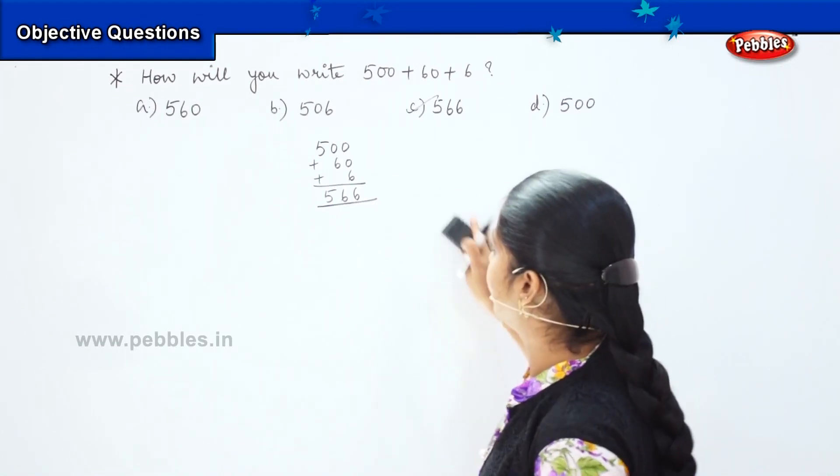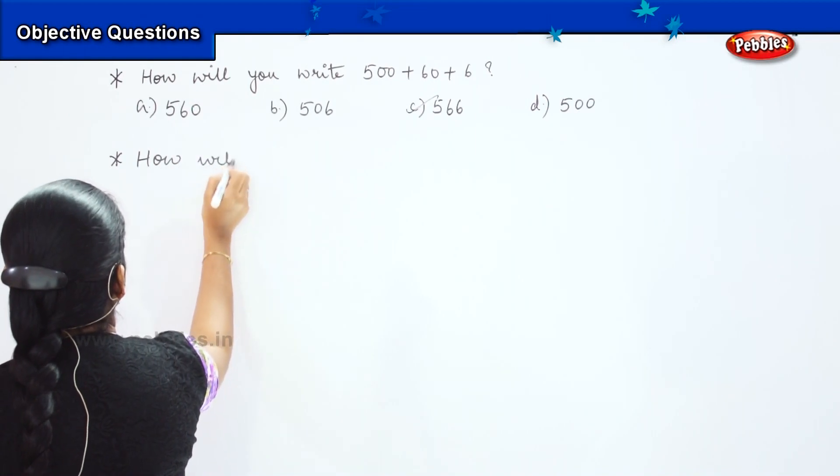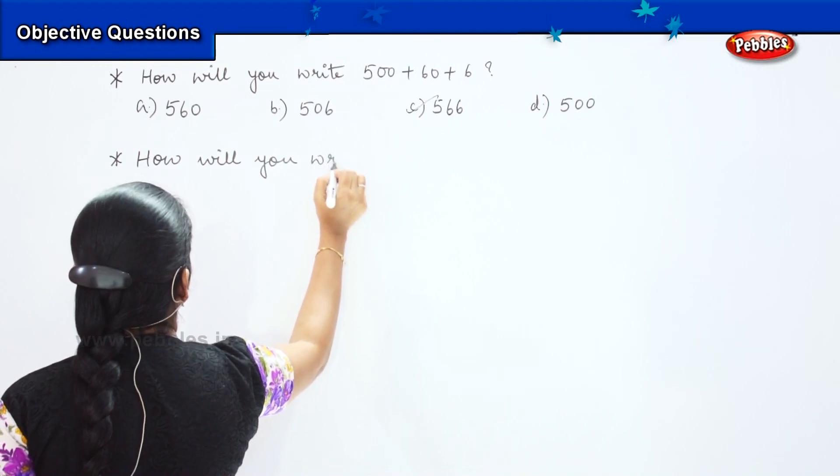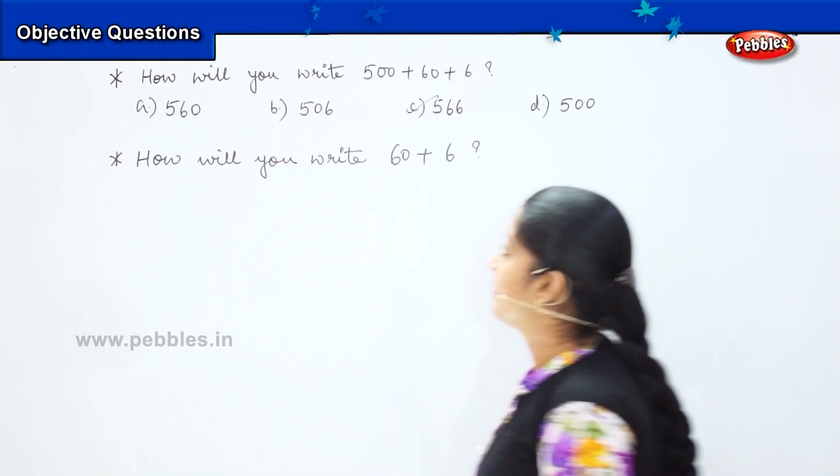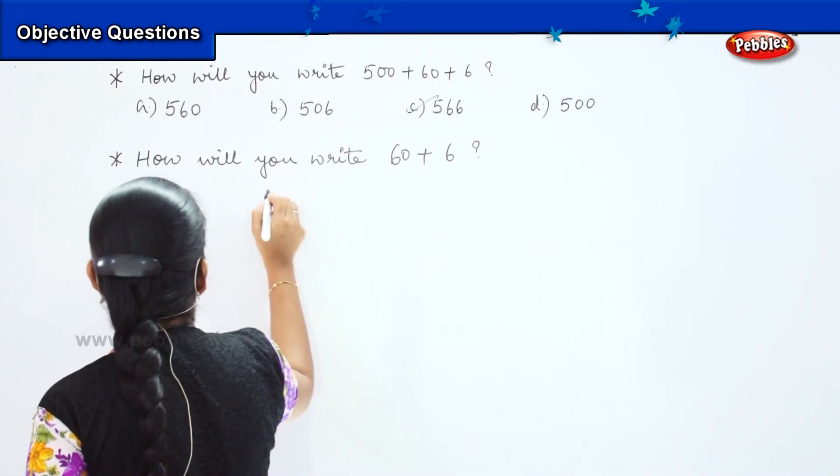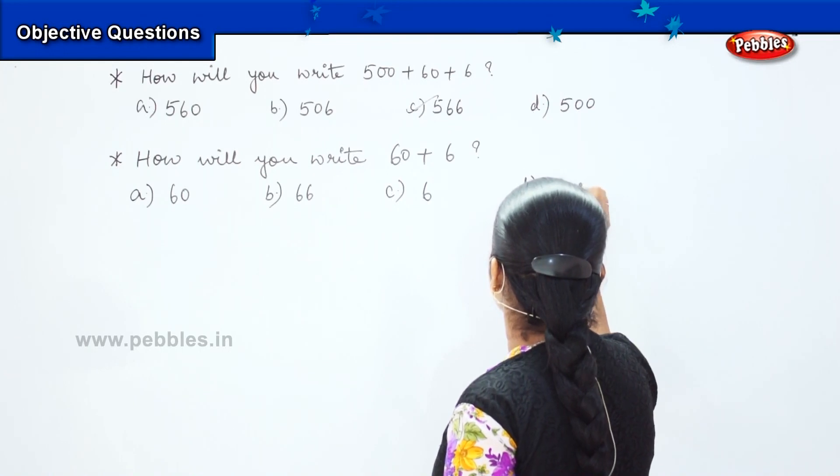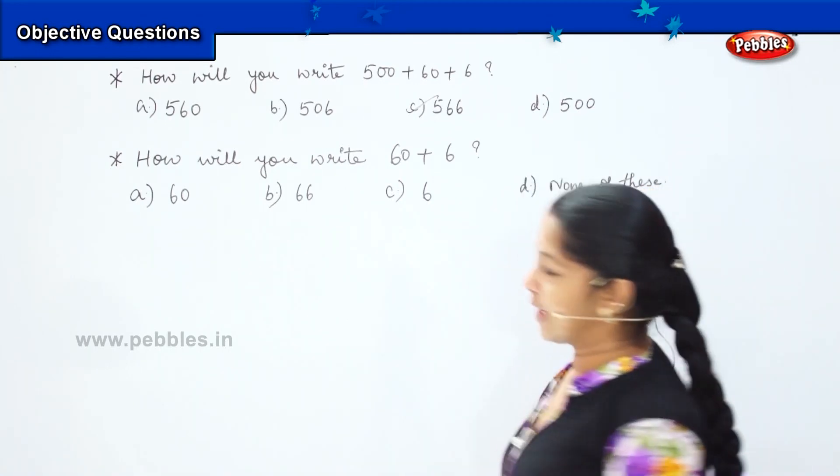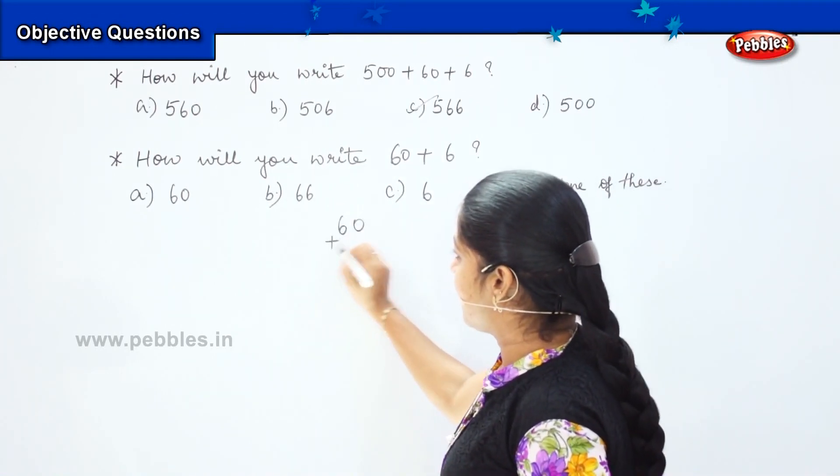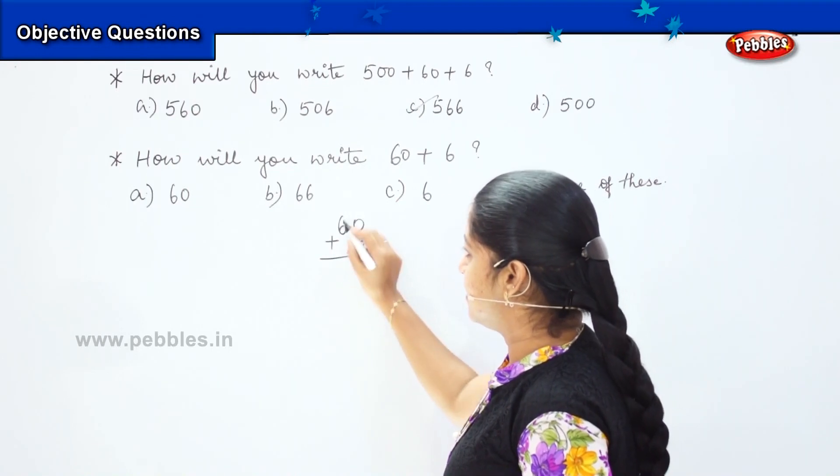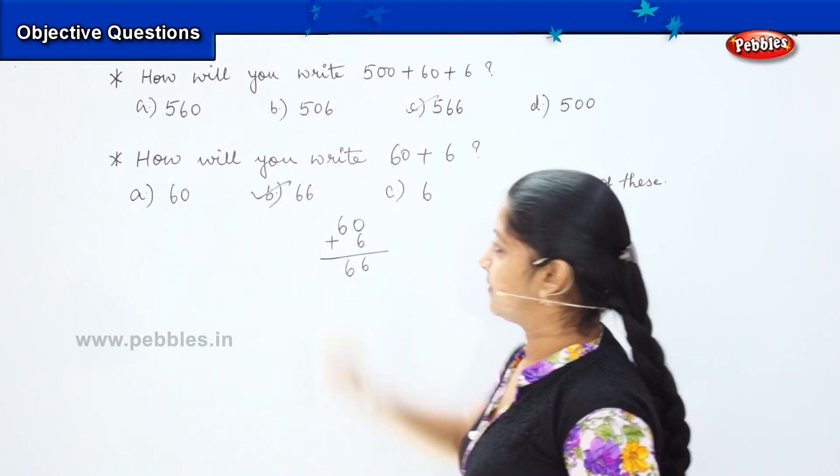Shall we do the same pattern once again? So here is my next question. How will you write 60 plus 6? And my options are 60, 66, 6, and none of these. So here children we have only tens and ones, we don't have hundreds. So to solve it, it has shown us 60 plus 6. So what will come here? 6 here and 6 here. So what is my answer? My answer is 66, which is option B.